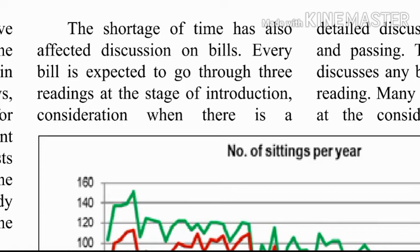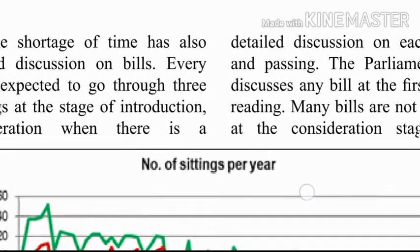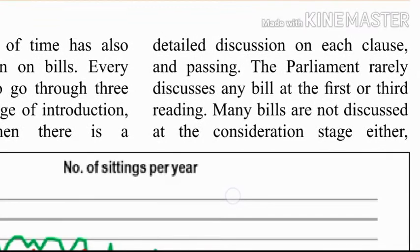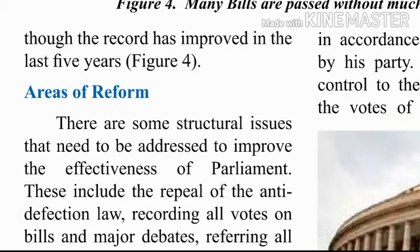The shortage of time has also affected discussion on bills. Every bill is expected to go through three readings: at the stage of introduction, consideration — when there is a detailed discussion on each clause — and passing. The Parliament rarely discusses any bill at the first or third reading, and many bills are not discussed at the consideration stage either, though the record has improved in the last five years.